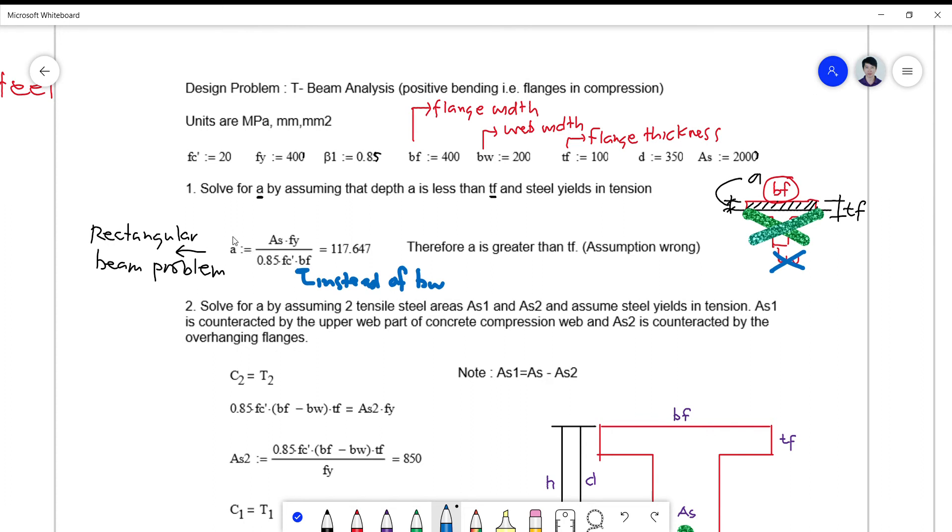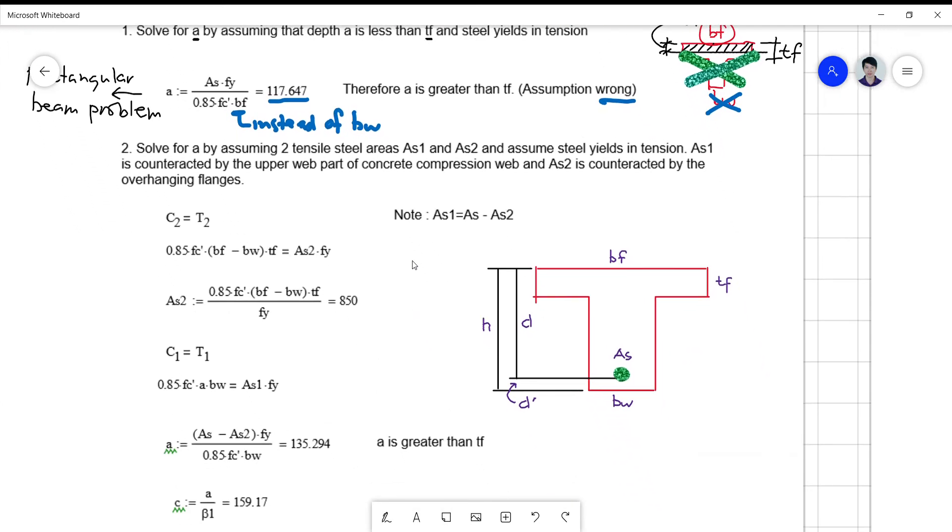And this is greater than the thickness of the flange, so our assumption that A is less than TF is wrong. And therefore we have to correct the assumption. So we now look into the problem as a T-beam problem.